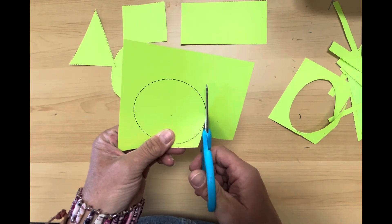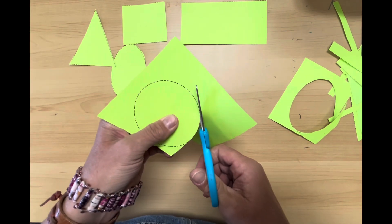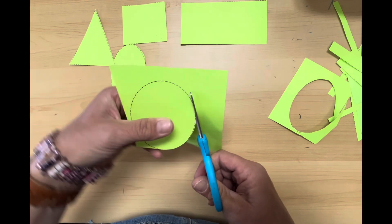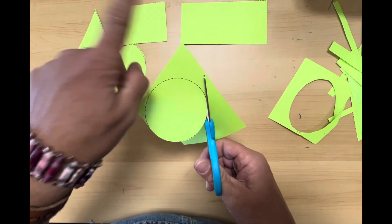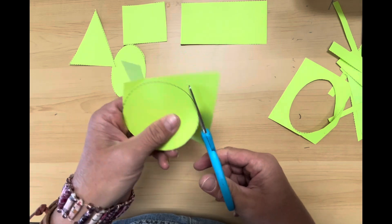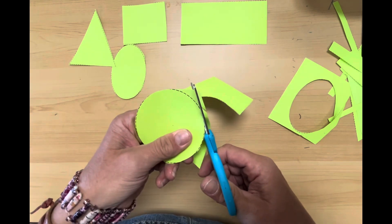Same thing on the circle. Scissors pointed away from me and I use my hand that's holding the paper to turn the paper. Scissors point straight ahead and I open close slowly.